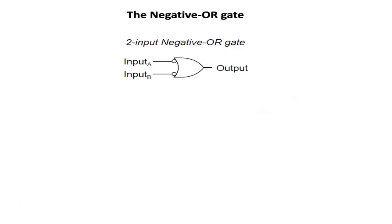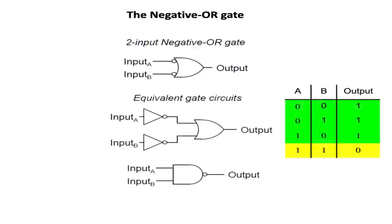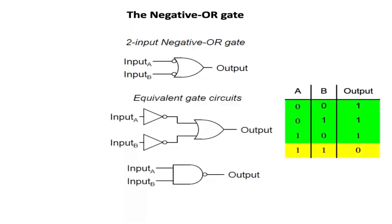Following the same pattern, a negative OR gate functions the same as an OR gate with all its inputs inverted. In keeping with standard gate symbol convention, these inverted inputs are signified by bubbles. This function can also be written as equivalent gate circuits. The behavior and truth table of a negative OR gate is the same as for a NAND gate.